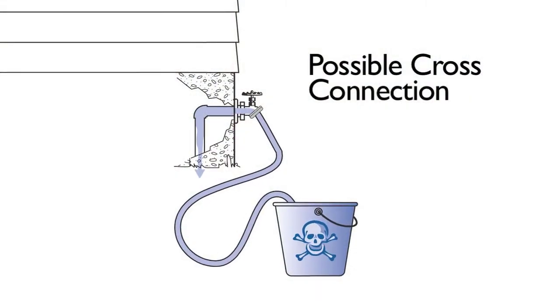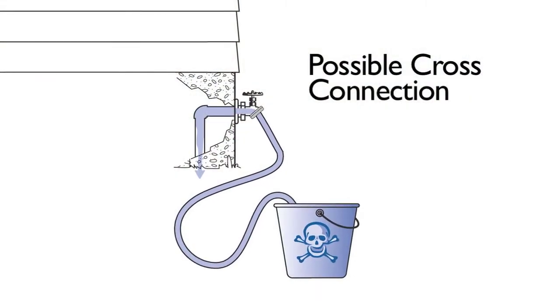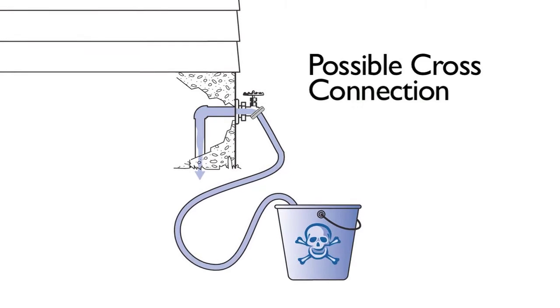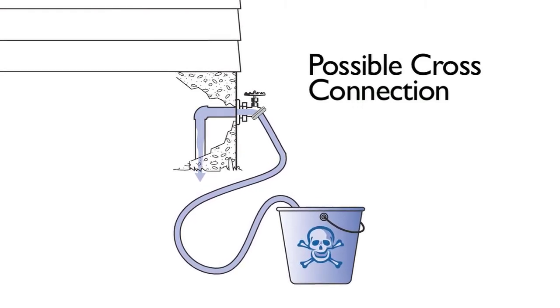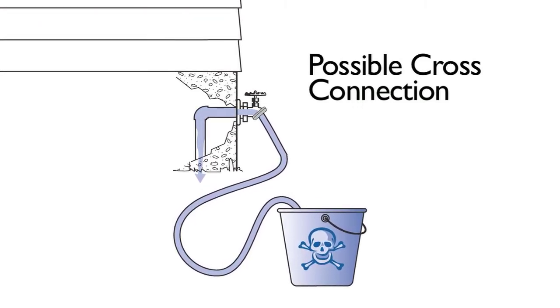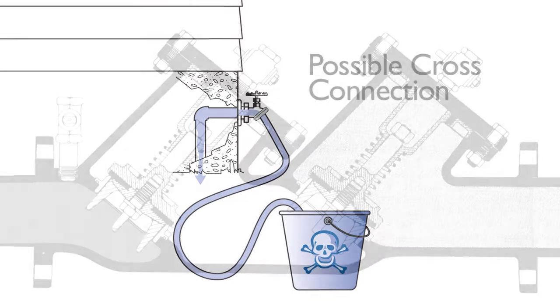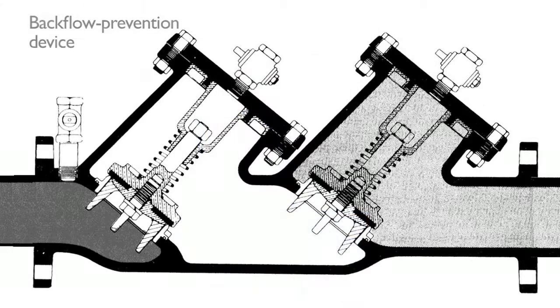Cross connections are points in a distribution system where chemical, biological, or other contaminants can come in contact with potable water. A backflow event is when contaminants are drawn or pushed into a water system at a cross connection.